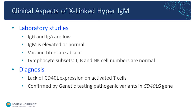Looking at laboratory testing, IgG and IgA will be low and IgM is elevated — though sometimes IgM may be completely normal, especially in younger children. Vaccine titers will be absent because to make IgG antibodies from vaccines you need T cell help and that crosstalk to occur, so vaccine titers will be absent. However, if you just measure T cells, B cells, and natural killer cells in the blood, they will all be in normal numbers.